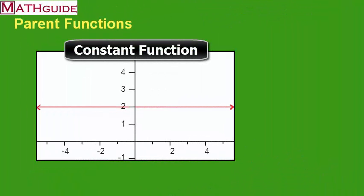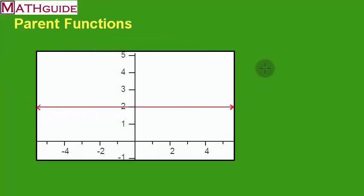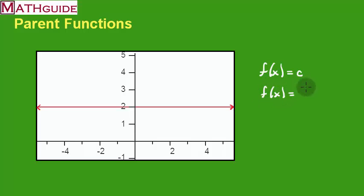This is our first function, and it's called a constant function. The reason why they call it a constant function is because the y value remains constant throughout the whole graph. The function can be defined as f of x equals some value — we could call it a, or in calculus we say c for some constant value. In this particular graph, c is 2, so the y value is always 2 and it never changes. Technically this is a linear function because it does form a line, but it has special meaning because the y value never changes, hence it's called a constant function.